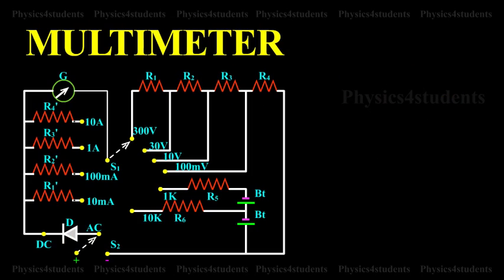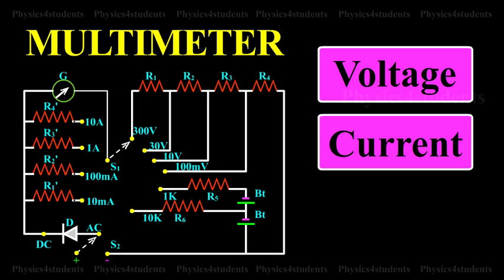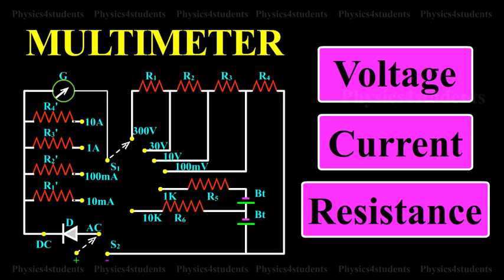The internal circuit of the multimeter is shown in the animation. It consists of a moving coil galvanometer. By incorporating suitable circuits with the galvanometer, the measurement of voltage, current and resistance can be done.